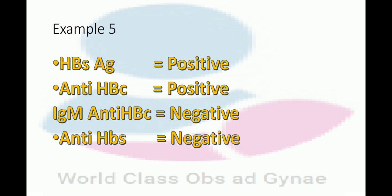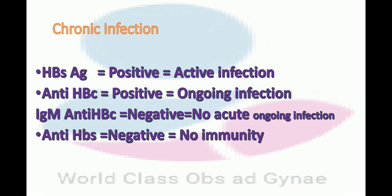Example five: HBs antigen positive, anti-HBc positive, IgM anti-HBc negative, anti-HBs negative. The answer is chronic infection. HBs antigen positive means active infection. Anti-HBc positive means ongoing infection. IgM anti-HBc negative means no acute ongoing infection. Anti-HBs negative means no immunity.